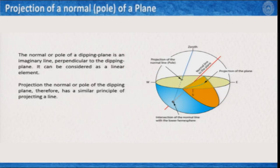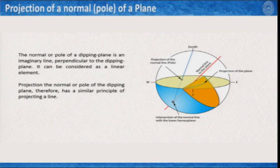Let us look at how to plot the pole of a plane on the stereonet. The pole of a plane is nothing but the normal line to the plane. The challenge is to plot this line on the stereonet given we have the plane on the stereonet. The technique is similar to plotting a line, but because we do not have the data of the line directly — we only have the plane — the normal of the pole of a dipping plane is an imaginary line perpendicular to the dipping plane, and it can be considered as a linear element.